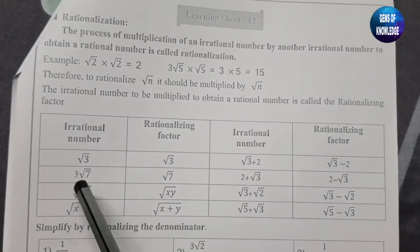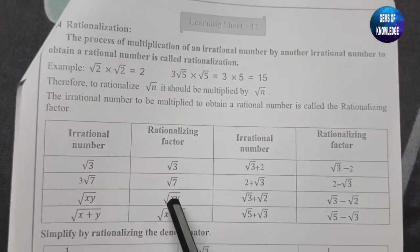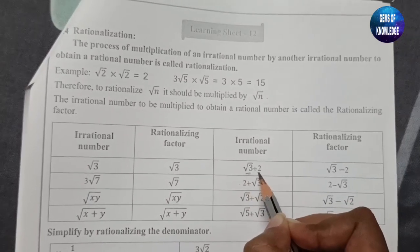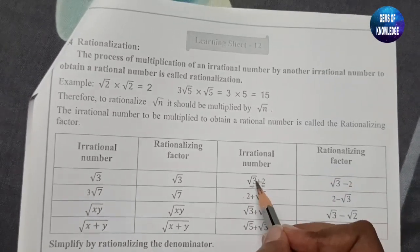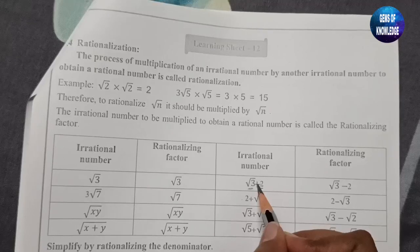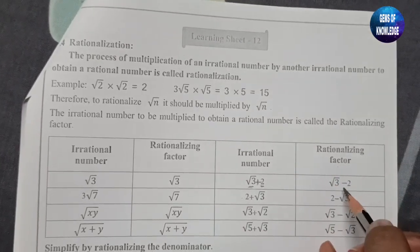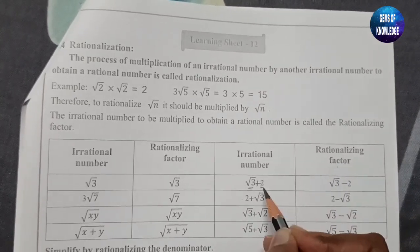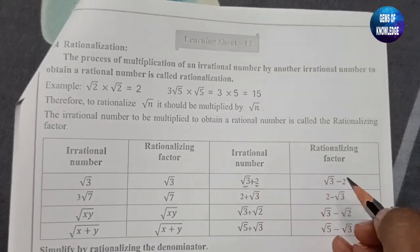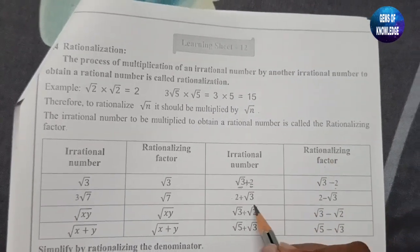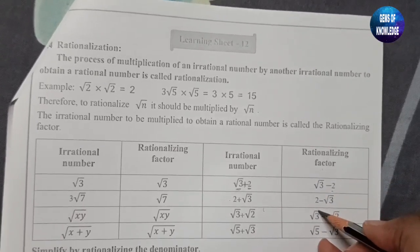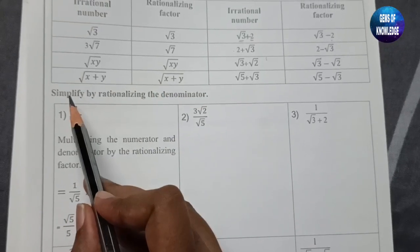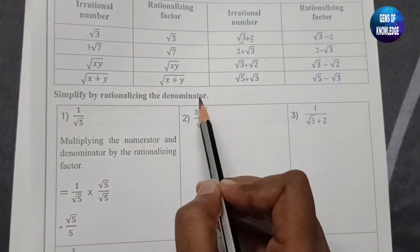If it is a single term — a monomial term — then the rationalizing factor will be the same. When it is a binomial term, meaning two terms added or subtracted, the rationalizing factor will reverse its sign. If there is a plus in the middle, it will change to minus, and if it was minus, it will change to positive.